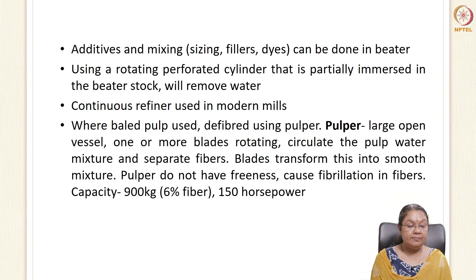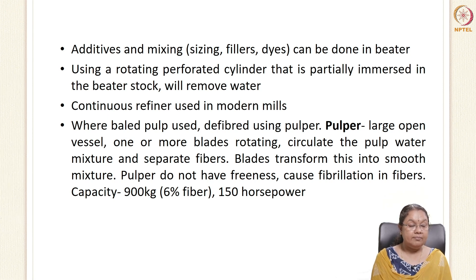Bale pulp can be used for developing paper sheets, but must first be pulped using a pulper. Pulpers are large open vessels with one or more rotating blades that circulate the pulp-water mixture, separate fibers, and transform bales into a smooth, slimy mixture. These pulpers cause fibrillation of fibers. The capacity of a pulper is around 900 kg using 150 horsepower, with a fiber content of around six percent.